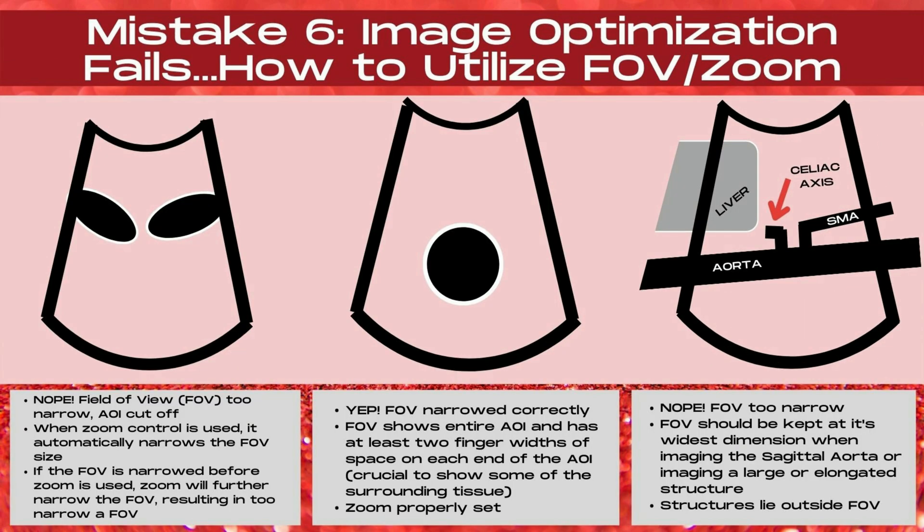Now let's see examples of the field of view control in use. In the image to the far left, the field of view is too narrow and the transverse common iliac arteries are cut off on the sides — zoom was used and automatically narrowed the field of view further. In the image to the far right, the field of view is too narrow. The field of view should be kept at its widest when imaging the sagittal aorta or any large or elongated structure, otherwise structures will lie outside the field of view.